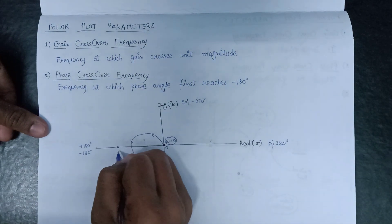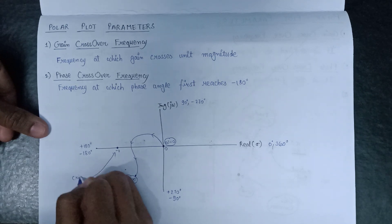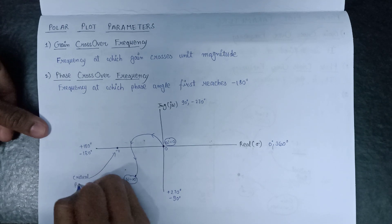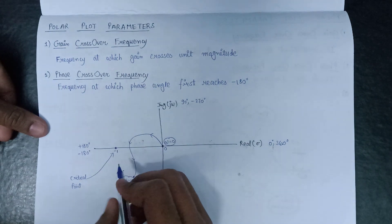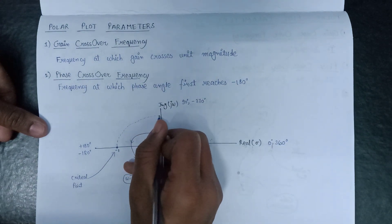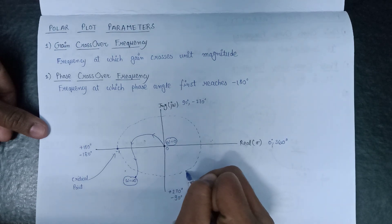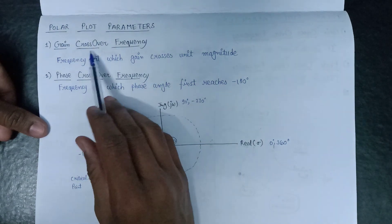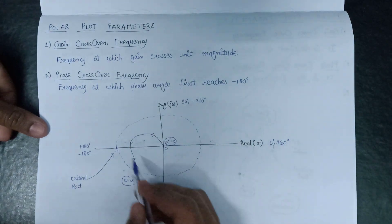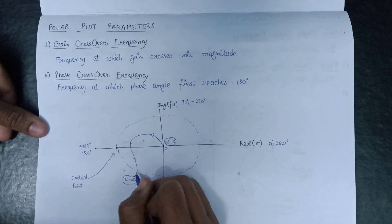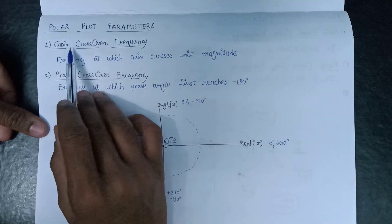Let's assume that this is minus 1, and here minus 1 is acting as a critical point. Let us draw a unit circle by taking the critical point as a reference. According to the gain margin definition, the frequency at which the polar plot crosses unit magnitude is known as the gain crossover frequency. The value of omega at this intersection point will serve as the gain crossover frequency.